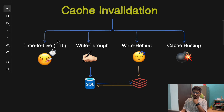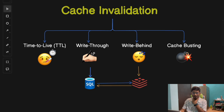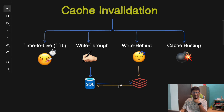The next cache invalidation method is the write-through mechanism. In a write-through cache, when data is written or updated in the main database, it is also updated in the cache server immediately. In contrast, with the write-behind technique, changes are written to the cache first and then periodically synced to the main database — not immediately, but at intervals.